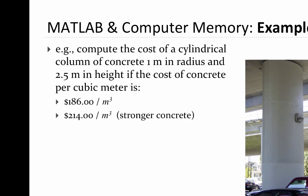Let's go through a more concrete example of how we deal with computer memory. We are going to compute the cost of a cylinder — effectively a column of concrete that is 1 meter in radius and 2.5 meters in height — if the concrete costs one of two different values: either $186 per cubic meter or $214 per cubic meter.